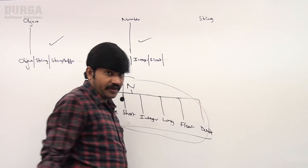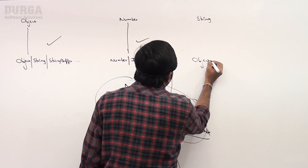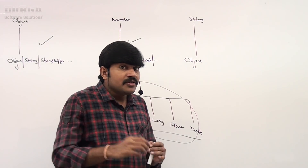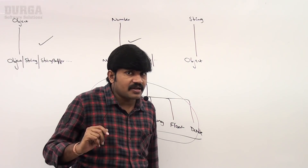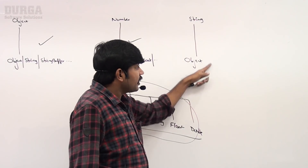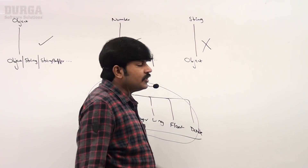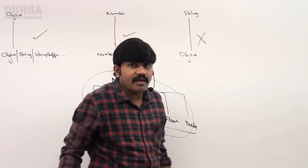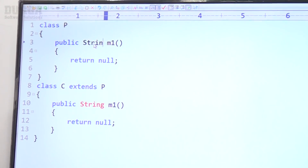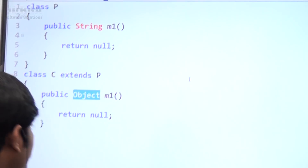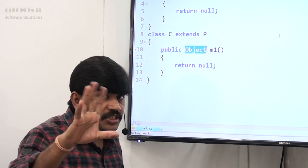Now, if the parent method return type is String but I take the child method return type as Object — is it valid? Our rule says child method return type should be same or a child type of the parent return type. But here I'm taking Object, which is the parent of String — this is not acceptable. It should be same or a child, not a parent.